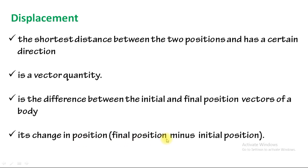Displacement equals the final position minus the initial position. So position is the concept of the object's location within its reference frame, and displacement is the change in position. The next topic will be distance.